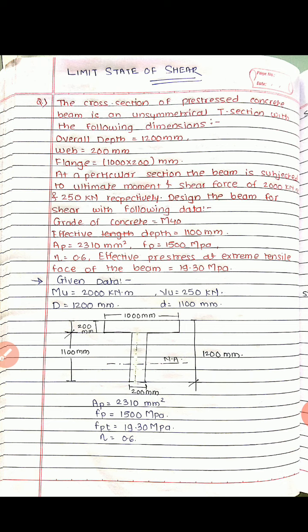The cross section of a prestressed concrete beam is an unsymmetrical T-section with the following dimensions: overall depth equals 1200 mm, web equals 200 mm, flange 1000 by 200 mm. At a particular section the beam is subjected to an ultimate moment and shear force of 2000 kN·m and 250 kN respectively. Design the beam for shear with grade of concrete M40.